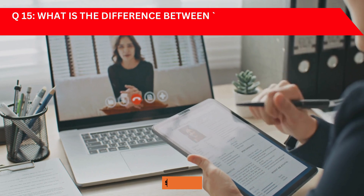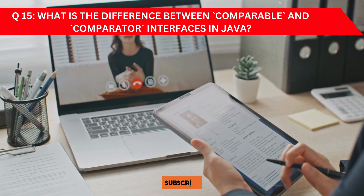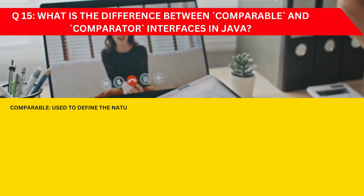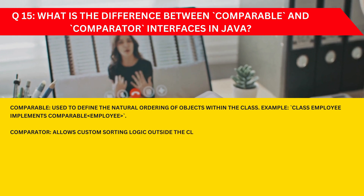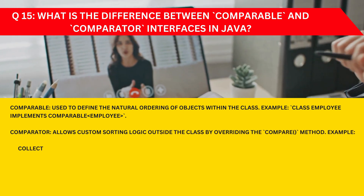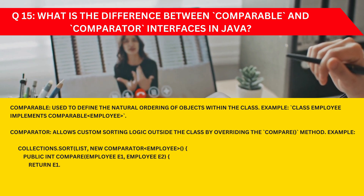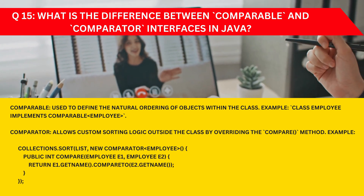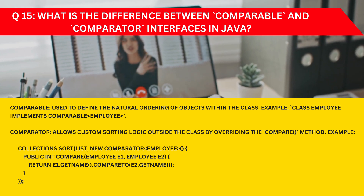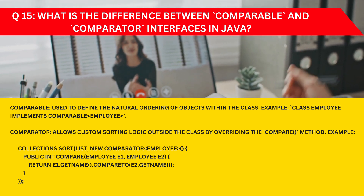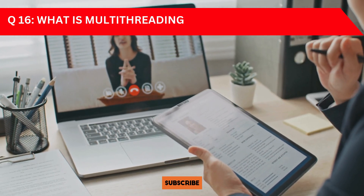Question 15: What is the difference between Comparable and Comparator interfaces in Java? Comparable is used to define the natural ordering of objects within the class. Comparator allows custom sorting logic outside the class by overriding the compare method. Code snippets are provided for both — please refer to them.